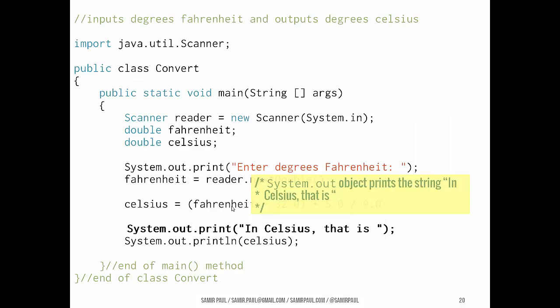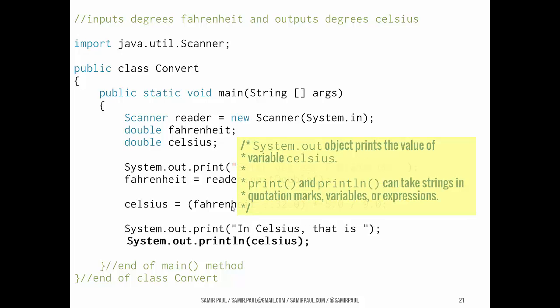So, we've got our new celsius value in the celsius variable. Then we want to say, okay, print, in Celsius. That is notice again, here we have print, not println. And finally, println, the celsius variable. Okay. So we can see this is going to print our temperature on the same line as that, in Celsius that is, and then it's going to add a new line.